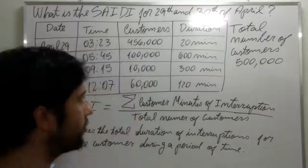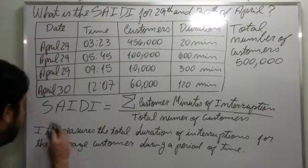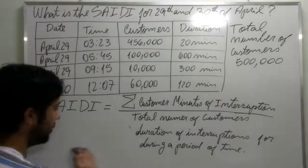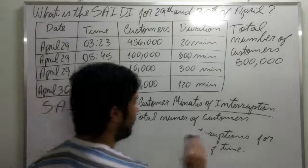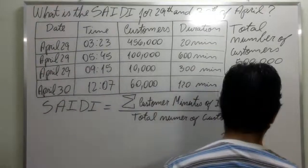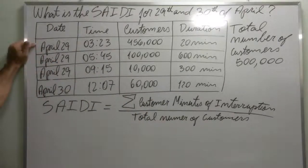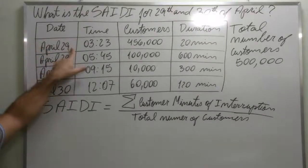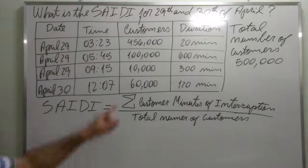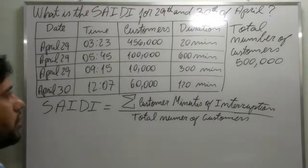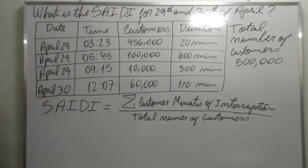Let's begin with the exercise. I'm gonna talk to you about what this is. Customer minutes of interruption for the day April 29th — the table says that on April 29th at 3:23 AM, 456,000 customers were interrupted for 20 minutes. This is the data provided by the utility.